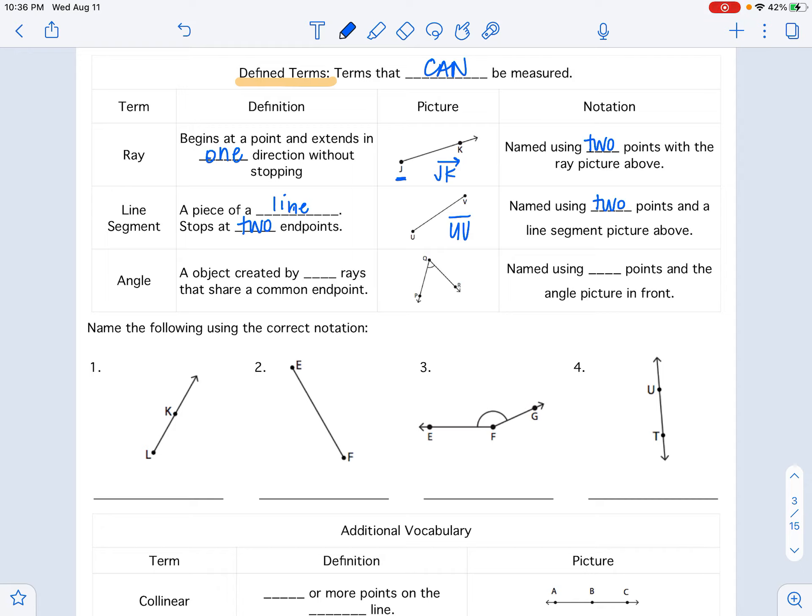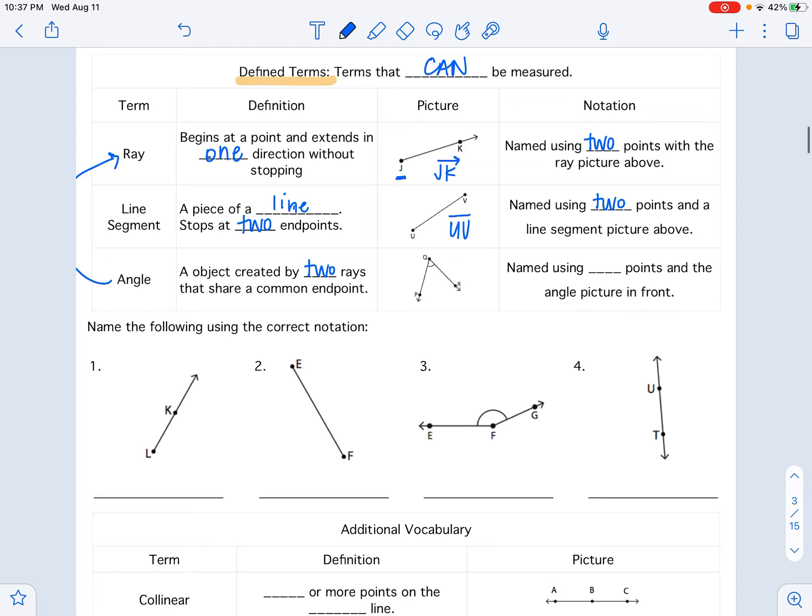And then you also have an angle. An angle is an object created by two rays that share a common end point. So it's going to look like a ray. And they're sharing an end point. Or it has two rays. And they come together at the end point. So right here we have ray QP and we have ray QR. And it makes angle PQR. We name it using three points with an angle picture in front. The end point that they share is always going to be in the middle. So I could also name it angle RQP. Notice that hinge or that angle is always in the middle.